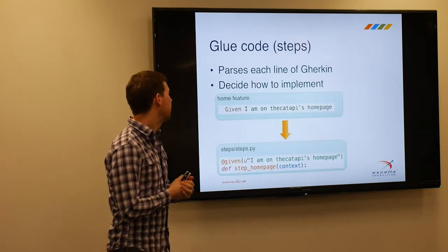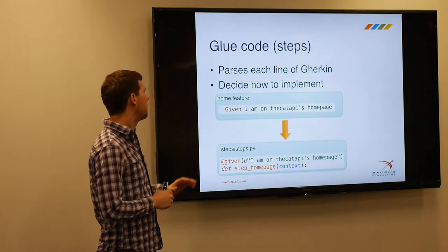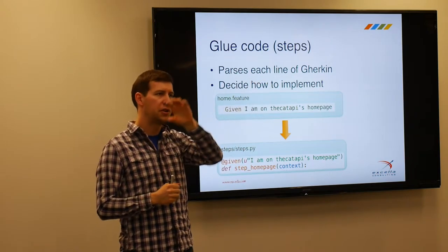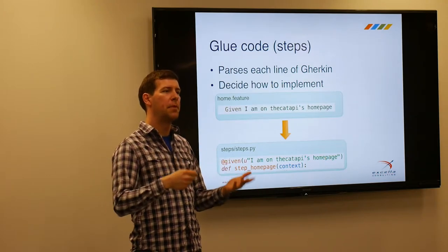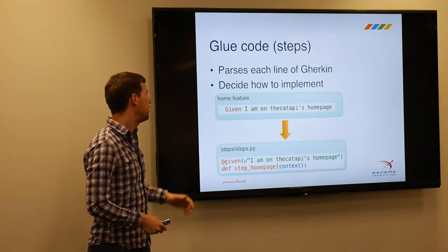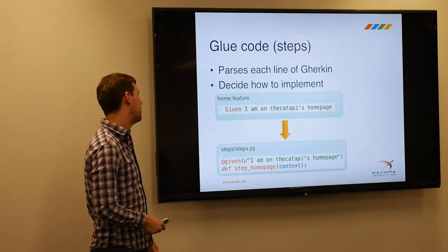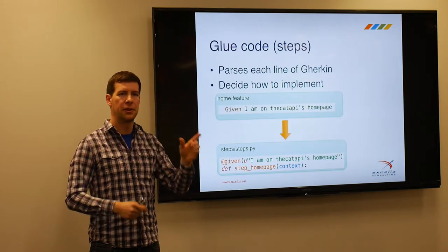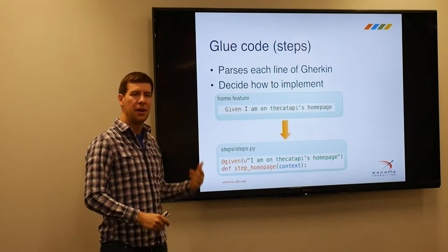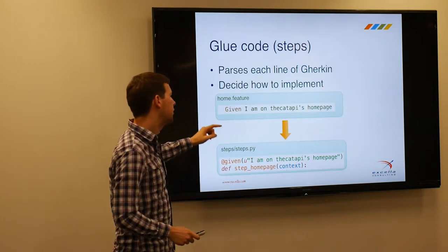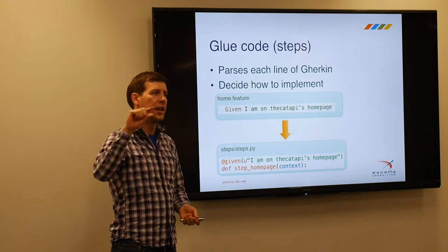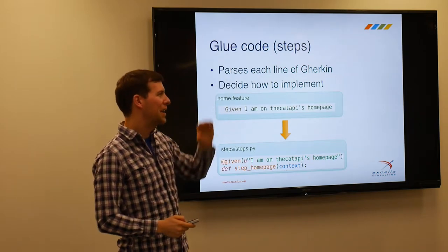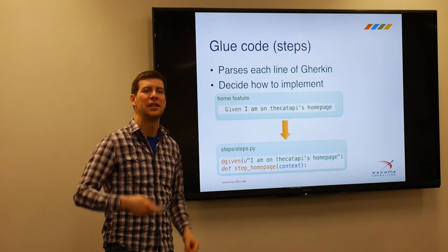So let's talk about glue code. We've got our environment ready. What the glue code does is parse each line of Gherkin individually and then look for a corresponding step that matches it. For example, in home.feature you have the line 'Given I'm on the cat API's homepage,' and in your steps file you'll have a decorator with a matching phrase — it has to be an exact match — and then just a method that implements it. That's where the magic happens.